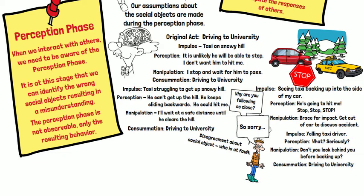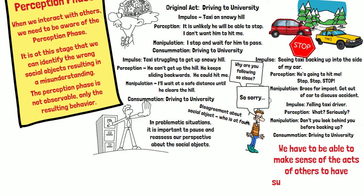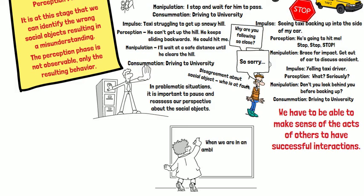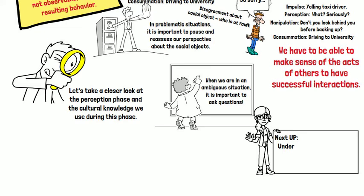In a problematic situation, it's very important to pause and reassess our perspective about the social objects. We have to be able to make sense of the acts of others to have successful interactions. When we are in an ambiguous situation, it is very important to ask questions. Let's take a closer look at the perception phase and the cultural knowledge we use during this phase.